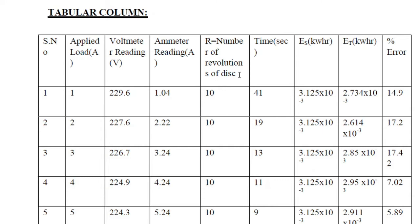For a 1 amp load, the disc makes 10 revolutions in 41 seconds. When the load is increased to 2 amps, it takes just 19 seconds to rotate 10 times — the speed of the disc has increased from 1 amp load to 2 amp load. The speed is proportional to the load.